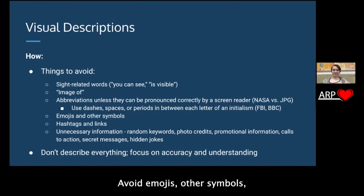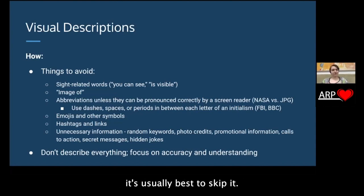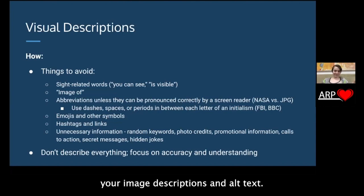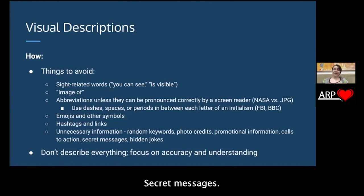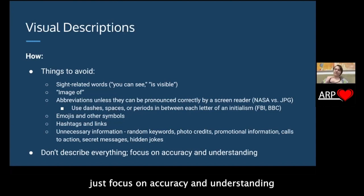Avoid emojis, other symbols, hashtags, and links — all of this leads into unnecessary information that doesn't really help your user understand what you're conveying. Also avoid random keywords — don't do that just to boost your SEO. It's not fair to the people who need your image descriptions and alt text. Don't include photo credits, promotional information, or calls to action — those all go in your main caption. Don't put secret messages or hidden jokes in image descriptions. It's really just about getting the information across. Don't describe everything — just focus on accuracy and understanding.